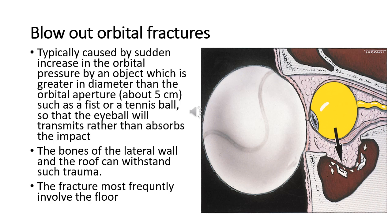The next subject is orbital blowout fracture. The blowout fracture of the orbital floor is typically caused by a sudden increase in orbital pressure by an impacting object greater in diameter than the orbital aperture — about five centimeters — such as a fist or tennis ball, sometimes called a tennis ball injury. The eyeball is displaced and transmits rather than absorbs the impact.